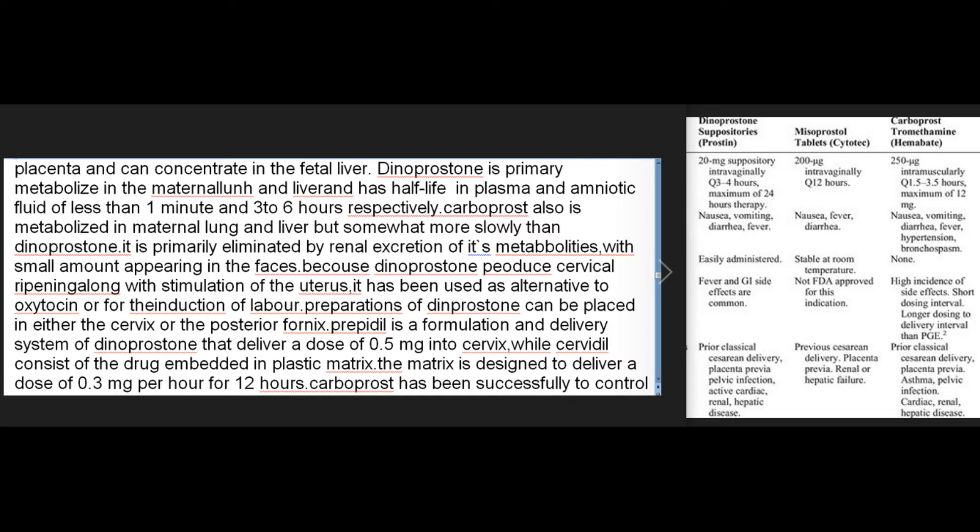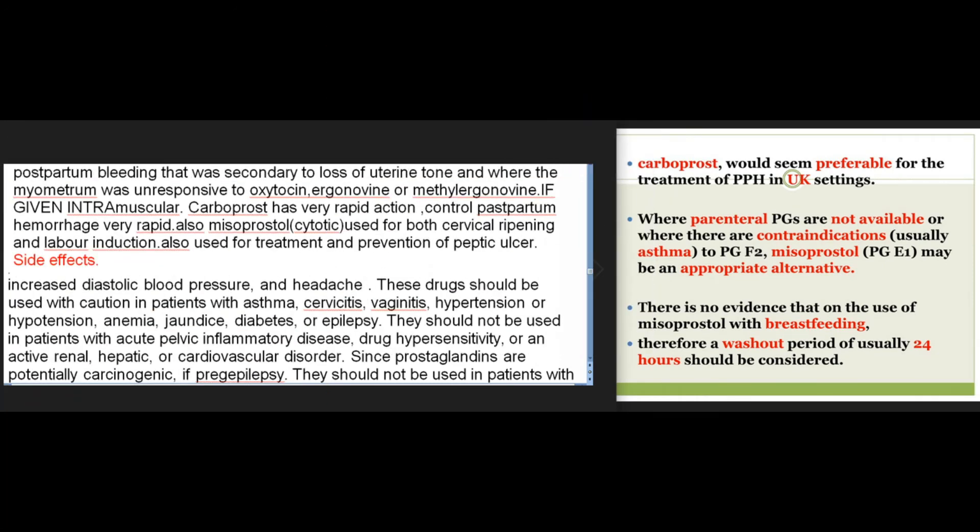Because dinoprostone initiates cervical ripening along with stimulation of the uterus, it has been used as an alternative to oxytocin for the induction of labor. Preparations of dinoprostone can be placed in either the cervix or the posterior fornix. Prepidil is a formulation that delivers a dose of 0.5 mg into the cervix, while Cervidil consists of the drug embedded in a plastic matrix designed to deliver 0.3 mg per hour for 12 hours. Carboprost has been successfully used to control postpartum bleeding secondary to loss of uterine tone where the myometrium was unresponsive to oxytocin, ergonovine, or methylergonovine. Misoprostol (Cytotec) is also used for cervical ripening and labor induction, as well as for the treatment and prevention of peptic ulcer.